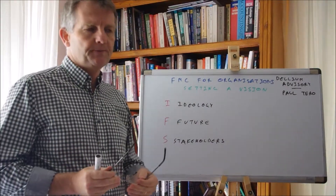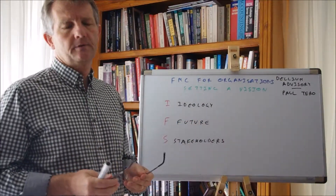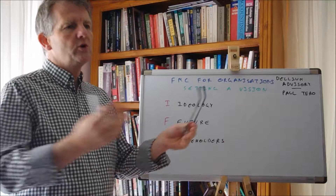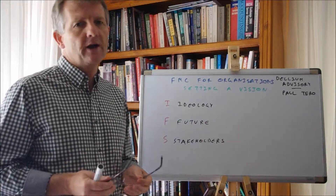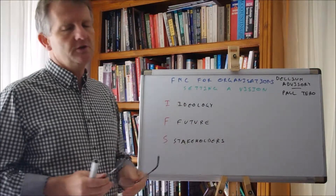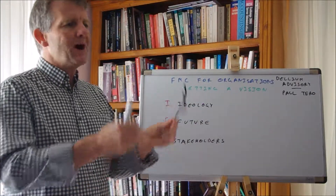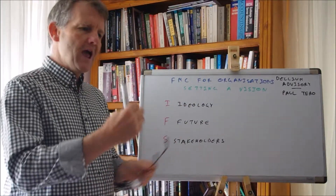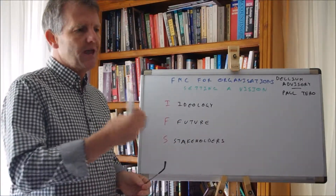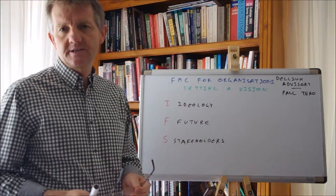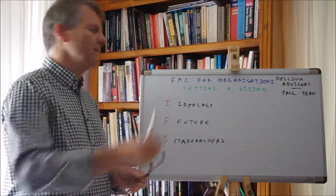Ideology — what are your values? What are the sorts of things that you hold dear? What are some of the words that describe you, that you want to be described by? F for Future — what is your envisioned future state? There you are in several years' time and yes, this is who we have become. This is what we see as success. This is our future state. This is what we aspire to.